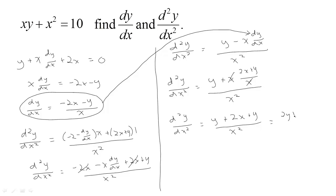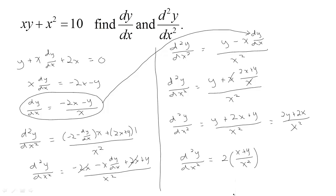That gives us 2y + 2x all over x squared, so d²y/dx² = 2(x + y) / x² for our second derivative.